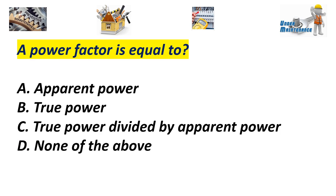A power factor is equal to A. Apparent power. B. True power. C. True power divided by apparent power. D. None of the above. Answer C. True power divided by apparent power.